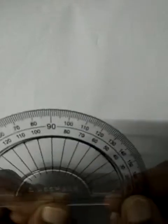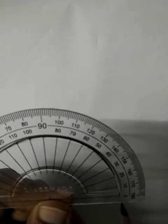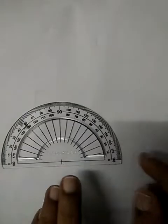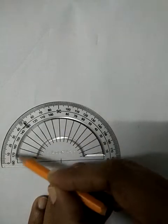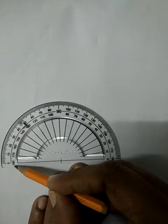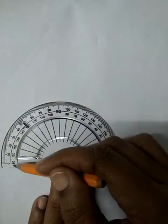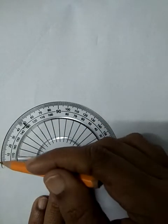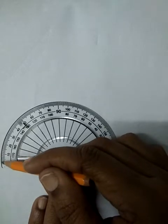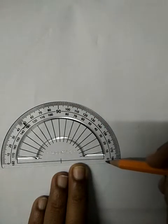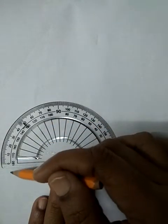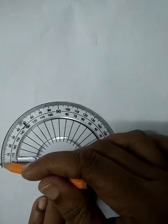In our protractor there are two scales. There's one inner scale on the inside. The inside scale starts from 0 on the right side and on the left goes to 180. The outside scale starts from 0 on the left and goes to 180 on the right. One scale is inner scale, we call it inner scale, this is 0 to 180. And the outer scale is the outside scale, this is 0 to 180.